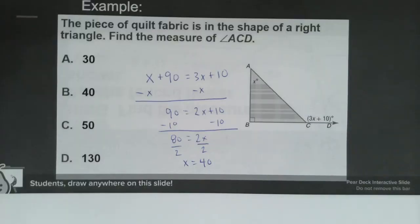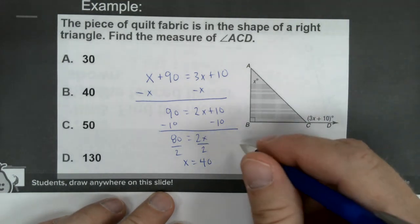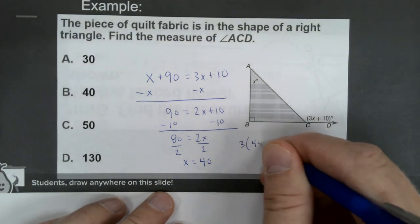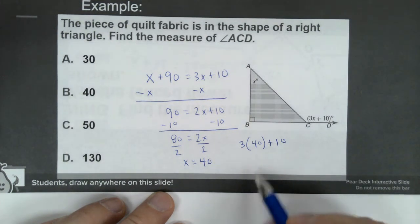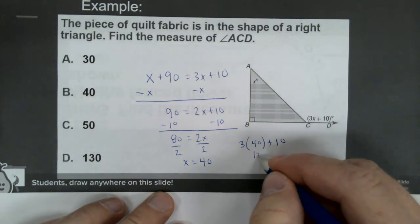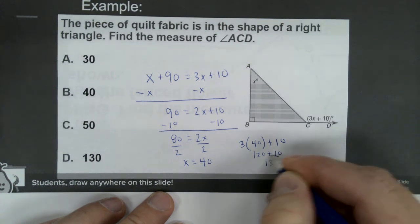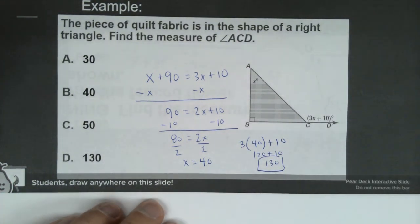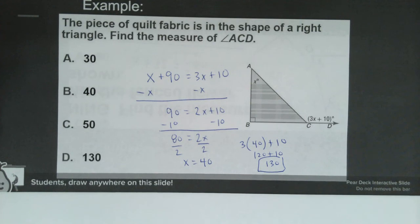They are asking for the measure of angle ACD. So all I have to do then is put 40 back in to the 3x plus 10. So 3 times 40 plus 10—well, 3 times 40 is 120, and 120 plus 10 gives you 130. So 130 would be your answer for this one, which a lot of you selected that on the chat. Had a few of you that didn't respond, so if you didn't respond, maybe you were having some issues. Anybody have any questions with that one, that process using the exterior angle theorem?